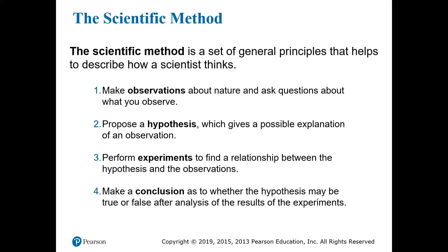The Scientific Method is a set of principles that describes how a scientist thinks. Generally speaking, the process of scientific investigation can be broken down into these four steps: making observations, forming hypotheses, performing experiments, and drawing conclusions.